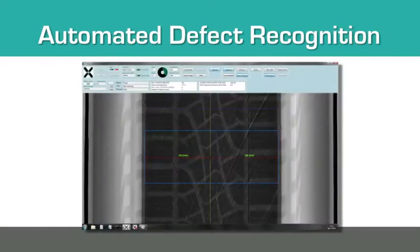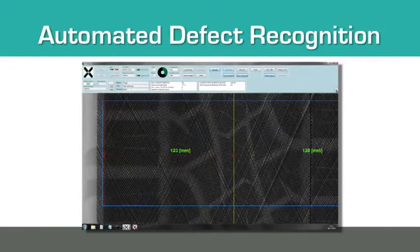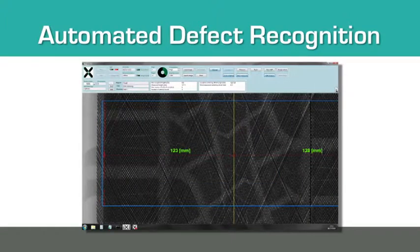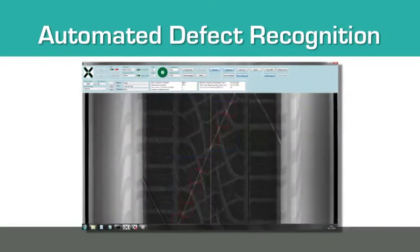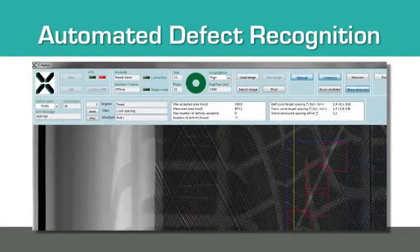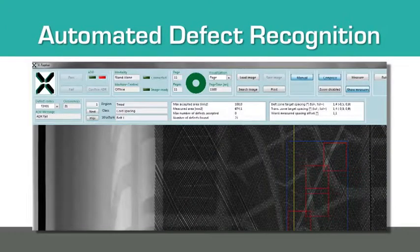The automated defect recognition software can discover defects like belt centering, chord angle, foreign bodies, and many other defects. The software package can be configured for use with a human operator or in fully automated mode, where the software makes the pass-fail decision.